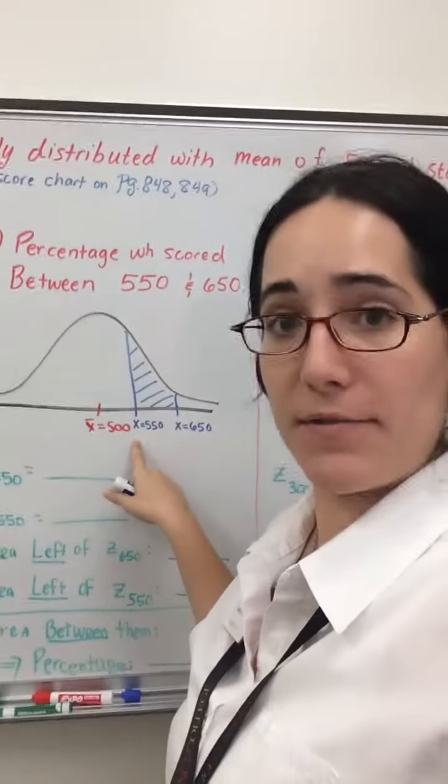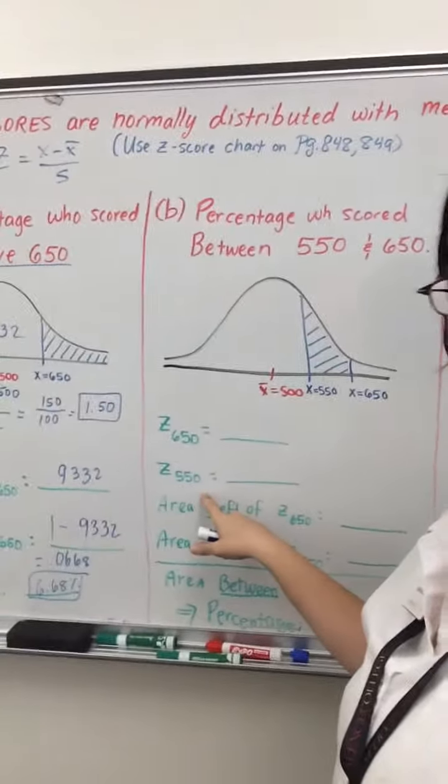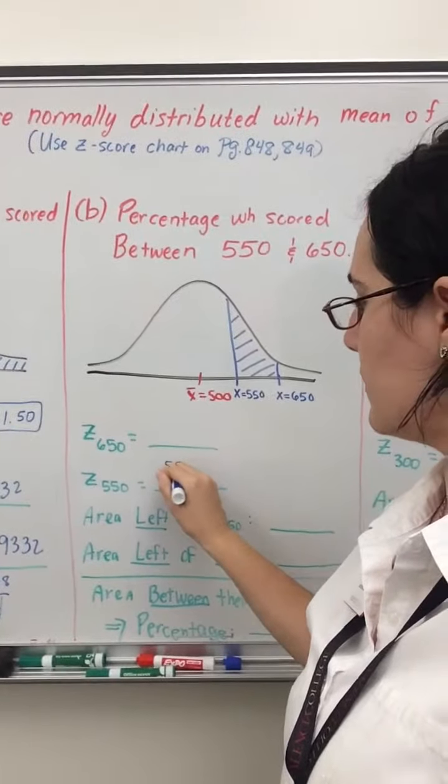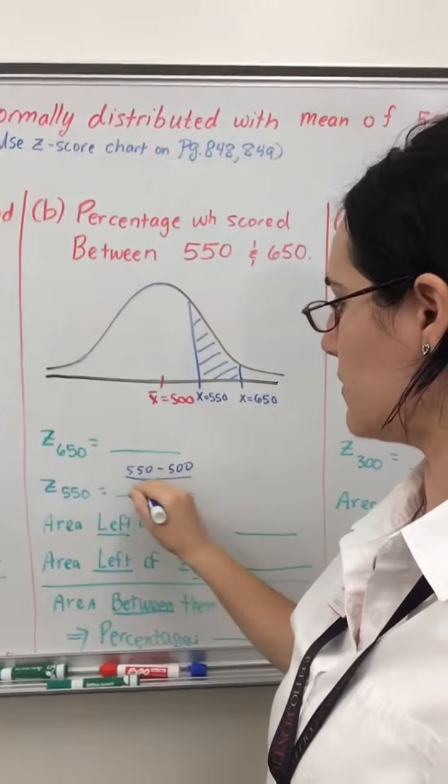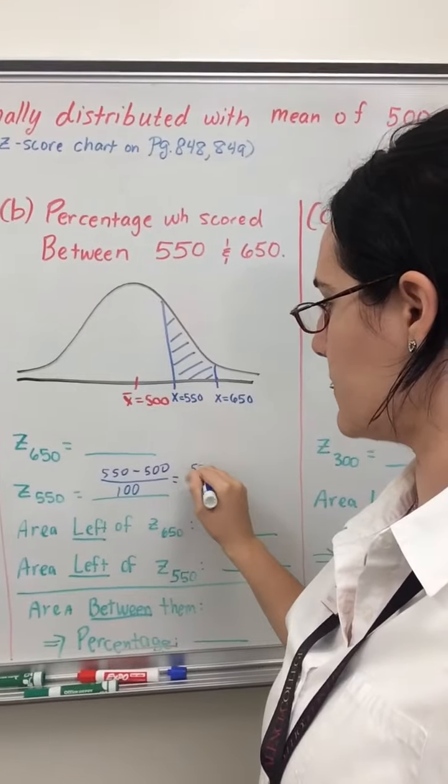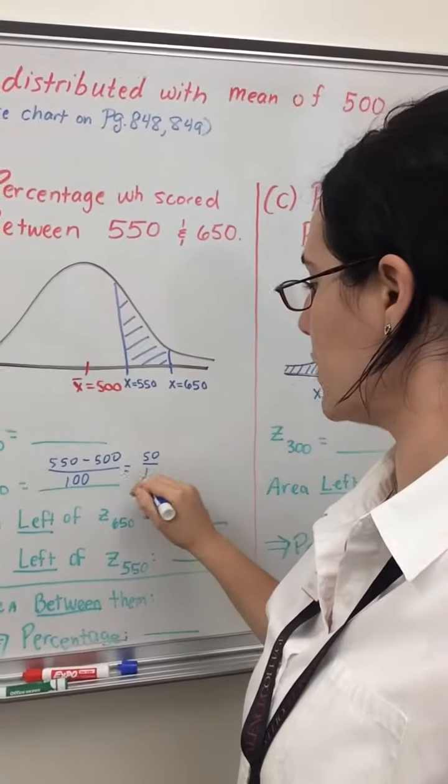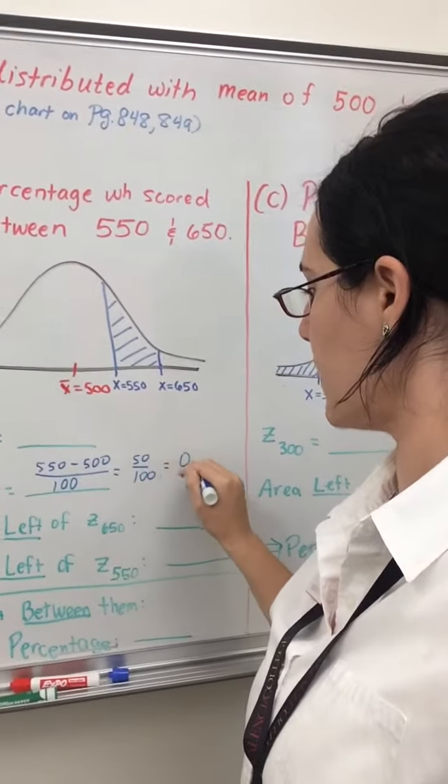The first one, 550, we'll talk about first. So 550 minus your mean of 500 divided by your standard deviation of 100 gives us 50 over 100, or 0.50.